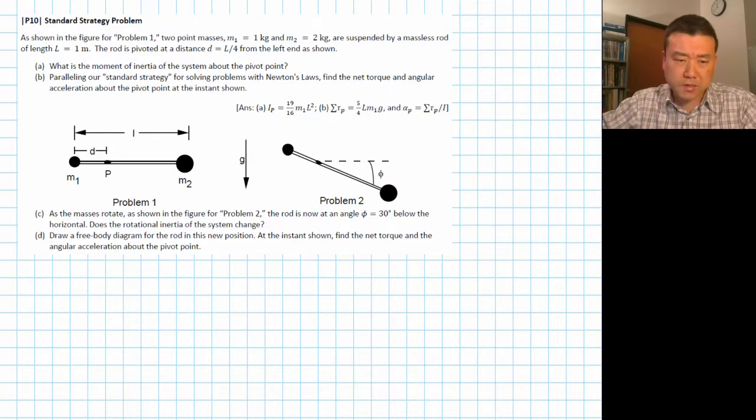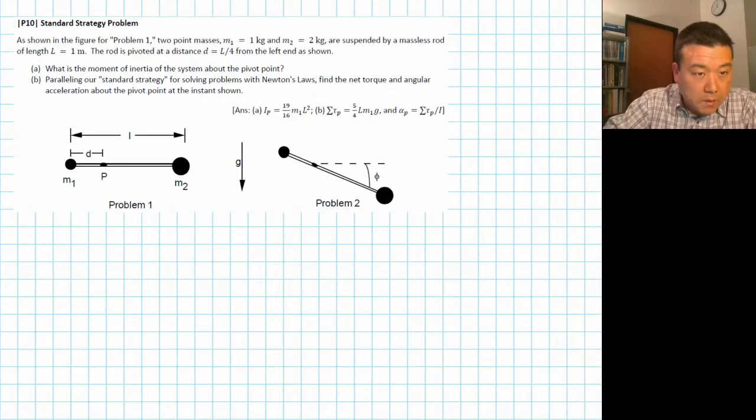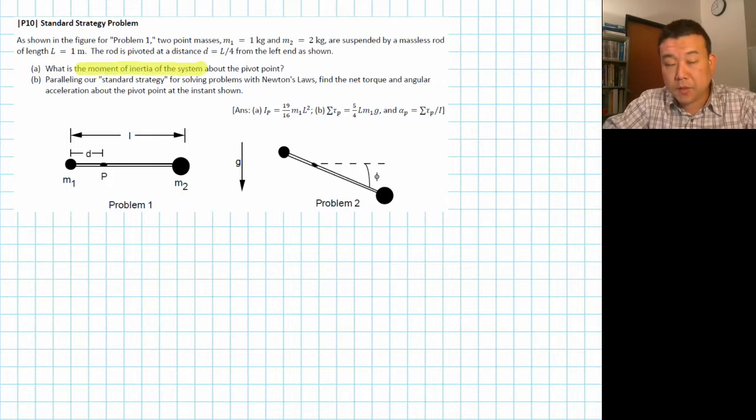By the way, this question is a little bit long, so it's taking up a lot of board space. Let me erase some of the parts so that I will have space to work it out. All right. So the question asks, what is the moment of inertia of the system about the pivot?